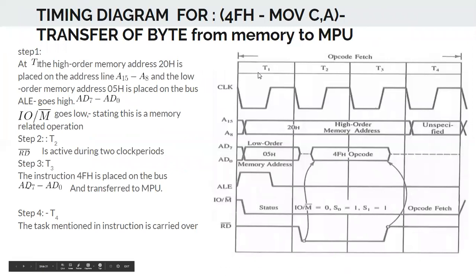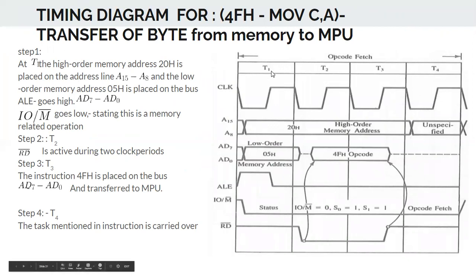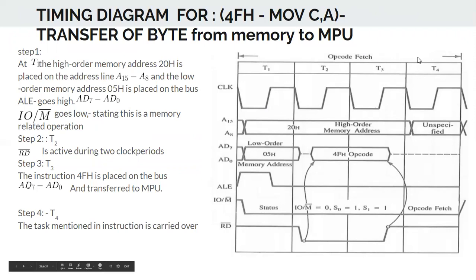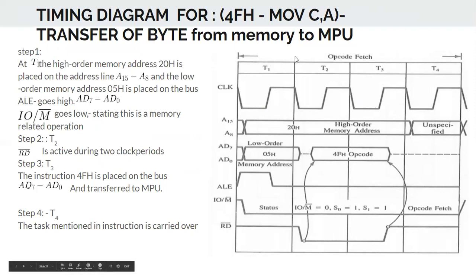The timing diagram shows how many clock periods each operation takes. One clock period is called T1, the next T2, and so on. An opcode fetch in general takes four clock cycles — four T-states. We will see what happens during each clock period.